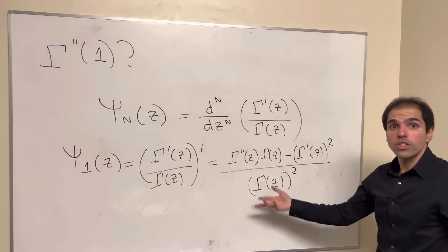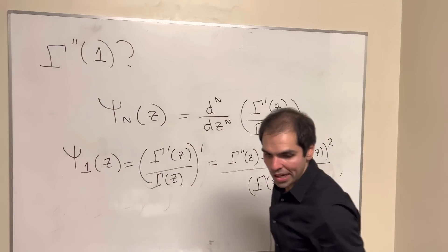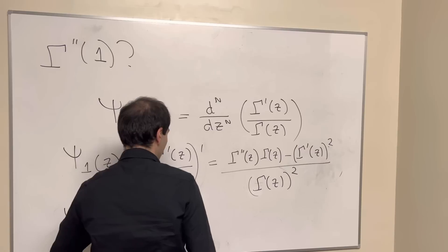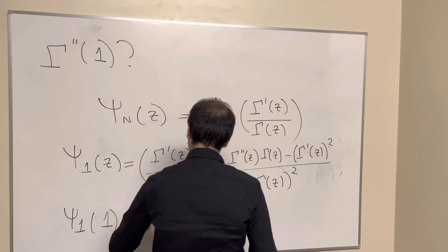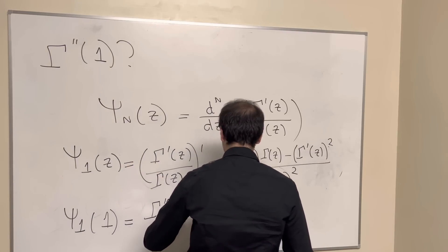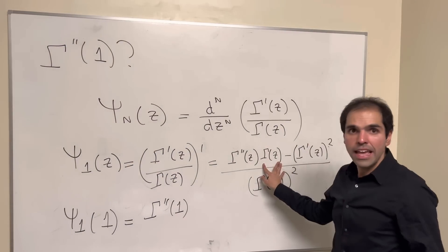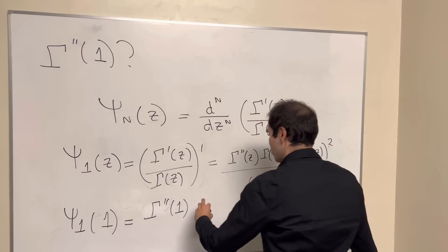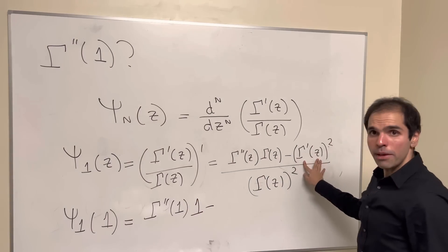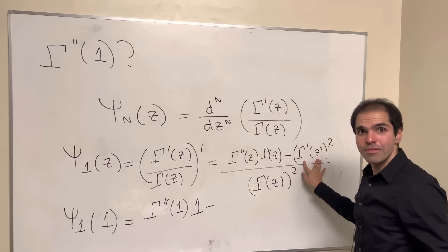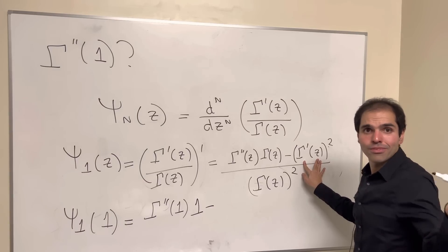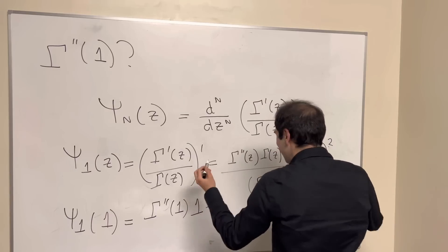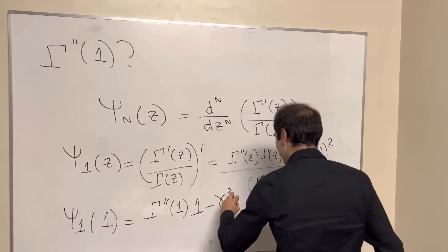And now you just have to plug in z equals 1, because that's ultimately what we need. So psi 1 of 1, that is gamma double prime of 1 times gamma of 1, which is 0 factorial, so it's just 1. And now gamma prime, we just calculated this to be minus Euler-Mascheroni, so minus gamma, so minus gamma squared.